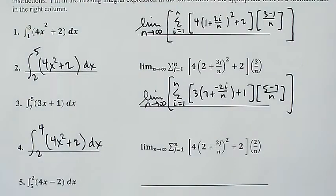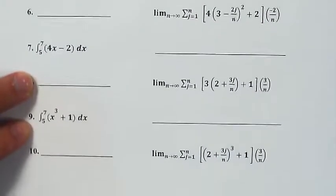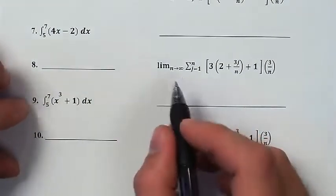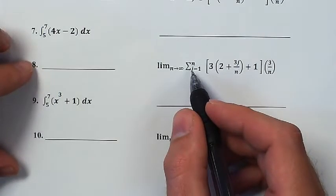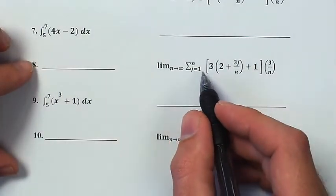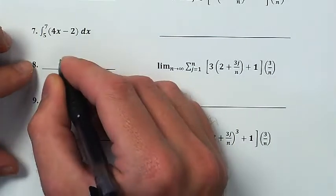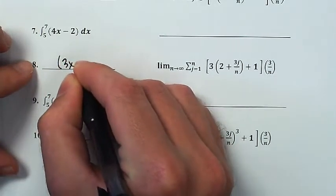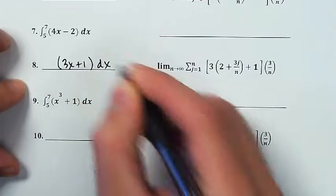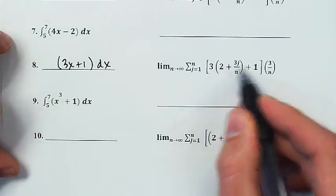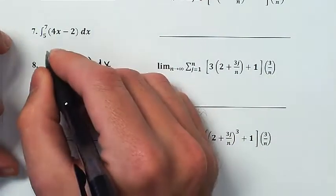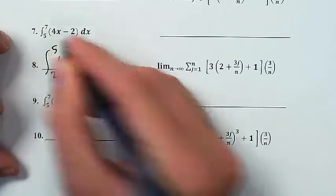And maybe I'll do another set of them. I'll do 8 and 9. Let's see, I've got over here, this is the limit of 3x + 1 dx. So my integrand is 3x + 1. And I'm integrating from 2 up to 2 plus 3. So that's going to be from 2 up to 5.